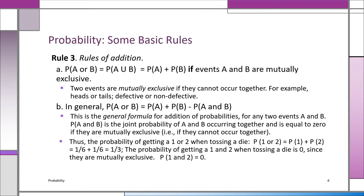Examples of mutually exclusive events would be head and tail — you can't have both. If someone asks what you got on a coin flip and you say 'head, tail,' they'll think you're crazy. You can get a head or you can get a tail; you can't get both.